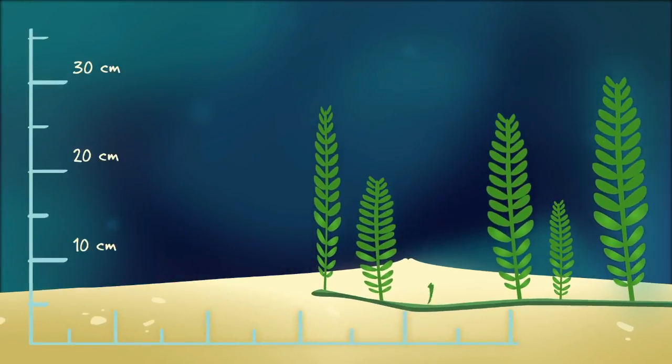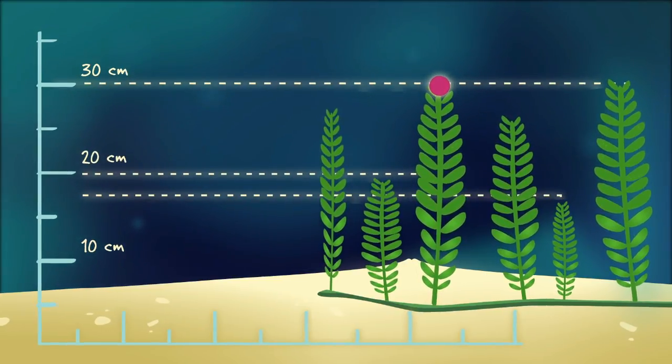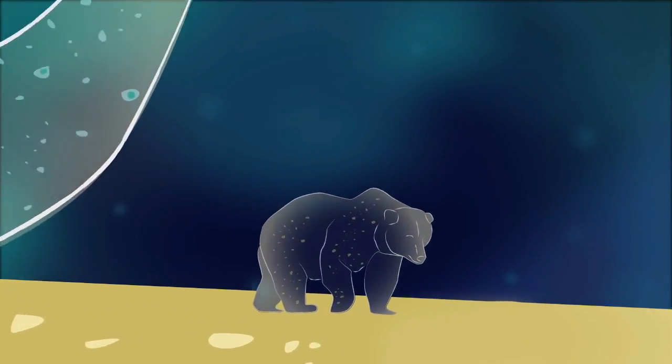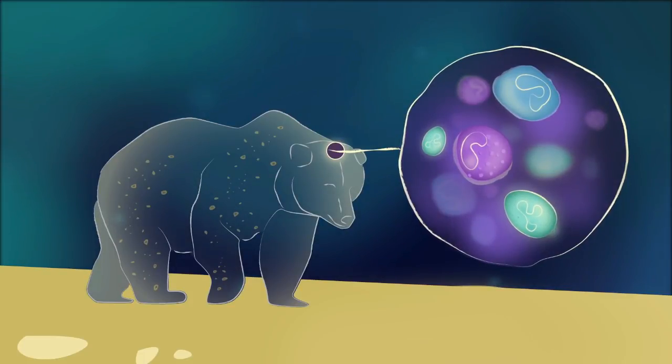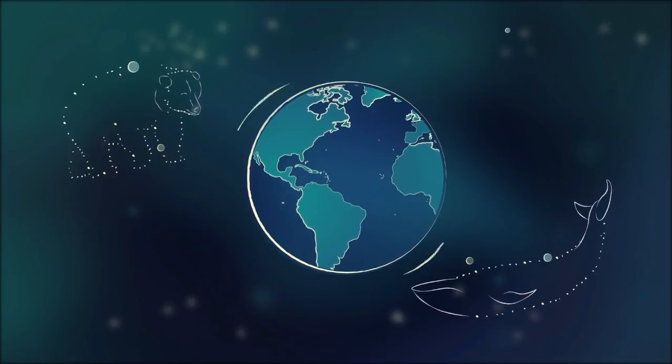Yet even the biggest unicellular organisms have limits, and none grows nearly as large as the elephant, whale, or bear. But within every big creature are trillions of minuscule cells, perfectly suited, in all their tininess, to keeping the Earth's giants lumbering along.